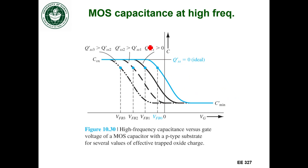But if we add charge to the oxide, it starts shifting the curve to the left. And so this first curve is for one amount of fixed charge in the oxide, the second curve is if you have even more fixed charge, the third curve is even more fixed charge, and so forth.